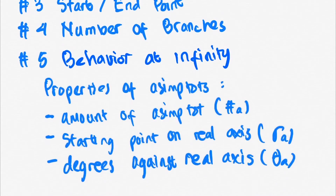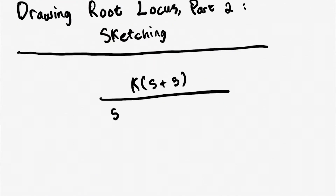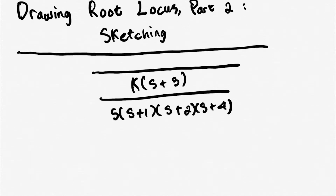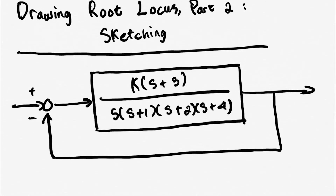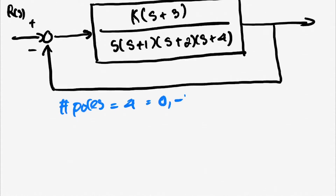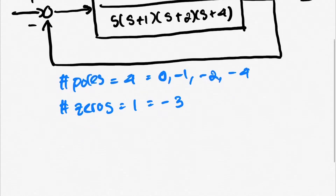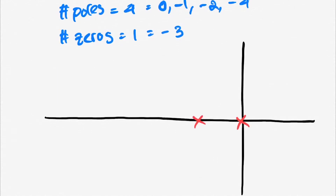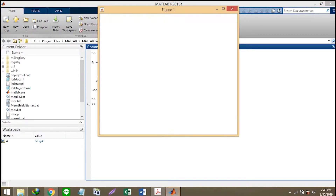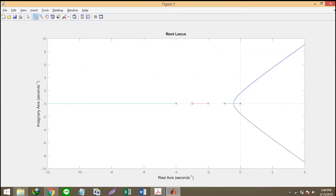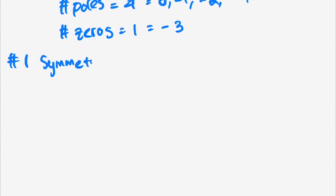Now let's get on to sketching the root locus. Let us consider a particular system and analyze its poles and zeros, then place them on the s-plane. We'll be using MATLAB to assist us in visualizing the root locus for this system, as it is very common for control engineers to use MATLAB when analyzing systems in industry or in the field.